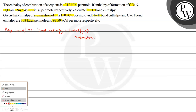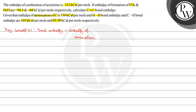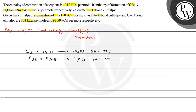Let us focus on the enthalpy of formation of CO₂ and H₂O. For CO₂: carbon in solid state plus oxygen in gaseous state gives CO₂ gas, with ΔH equal to minus 94.5 kilocalorie per mole. For H₂O: hydrogen gas plus half O₂ in standard state gives H₂O liquid, with ΔH equal to minus 68 kilocalorie per mole.